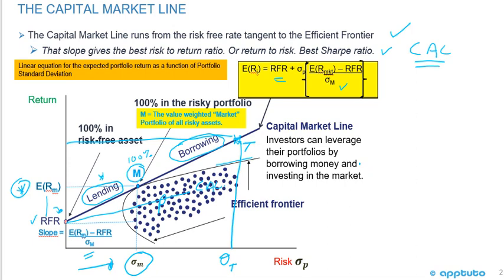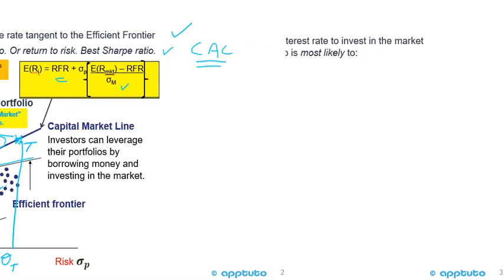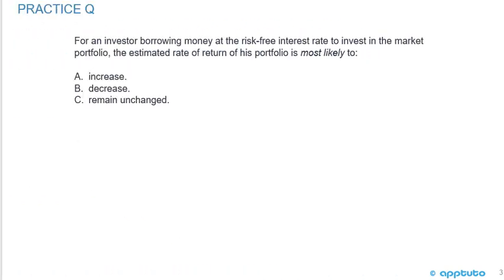That is the capital market line and the capital allocation line. The capital market line is a special case capital allocation line that runs from the risk-free rate tangent to the efficient frontier, and that slope gives us the best risk-to-return ratio, or the best Sharpe ratio.